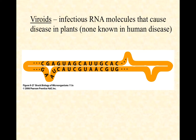As far as we know, viroids are limited to plant diseases. There are currently no known viroid diseases among humans, but it's worth knowing the term. Remember, the suffix '-oid' in science means sorta-kinda — so a viroid is sorta-kinda a virus, but missing some pretty important features, like a capsid. Viroids are infectious RNA molecules that cause diseases in plants.